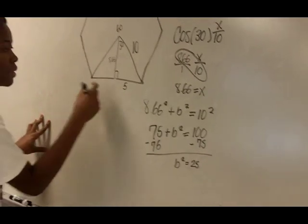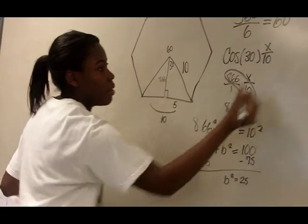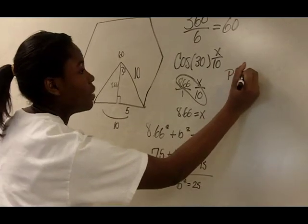So to find the full side you just multiply by 2, so the full side is 10. And the perimeter is 60.